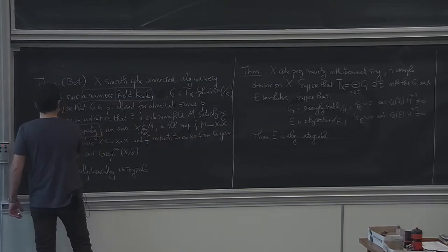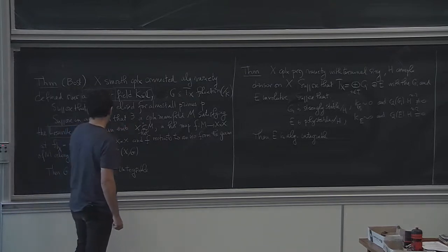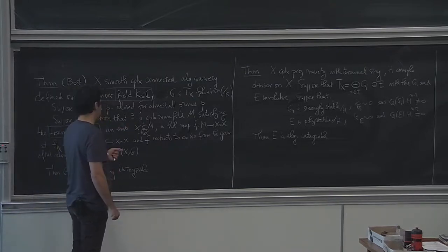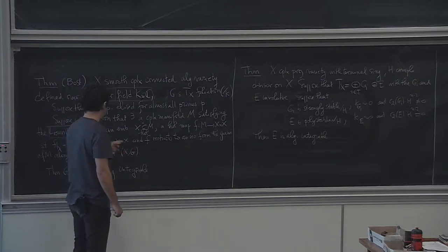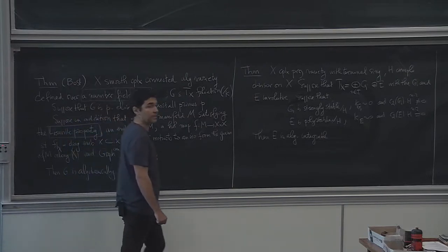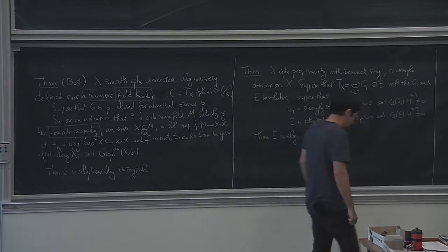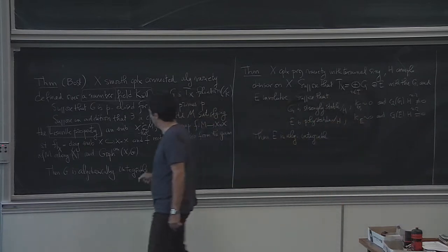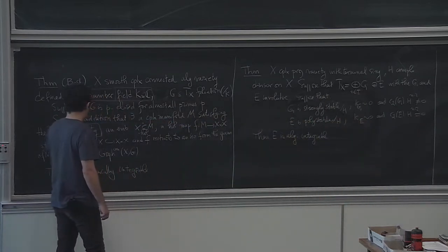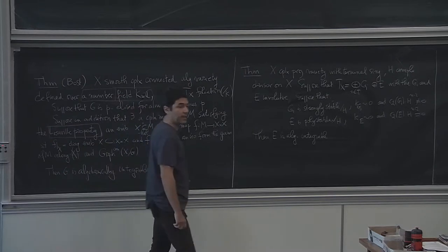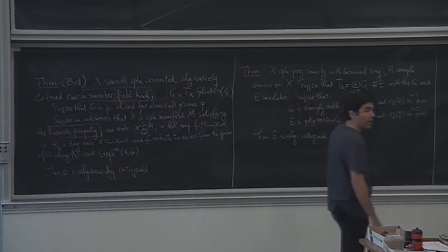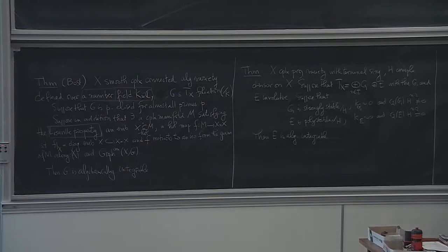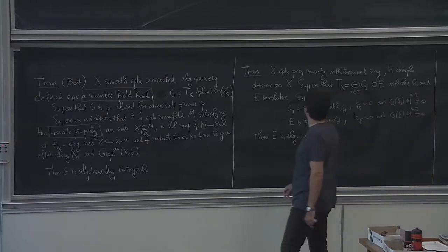And you assume the existence of this complex manifold M satisfying the Liouville property. M is just a complex manifold satisfying the Liouville property that extends the graph of the foliation — this sits inside X times X. If you have these assumptions, Bost proved that the foliation is algebraically integrable. This is the theorem we want to apply to prove what remains for the Beauville-Bogomolov decomposition theorem.